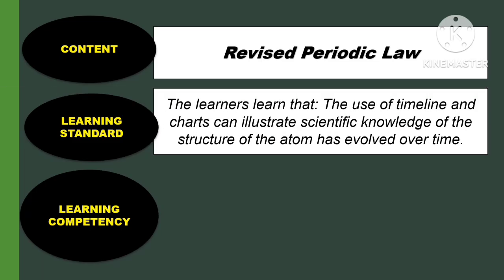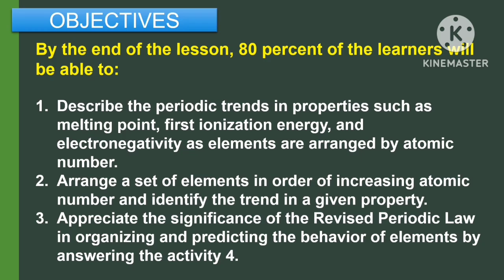This lesson is under the Matatag Curriculum. For the objectives, by the end of the lesson, 80% of the learners will be able to: First is to describe the periodic trends in properties such as melting point, first ionization energy, and electronegativity as elements are arranged by atomic number.